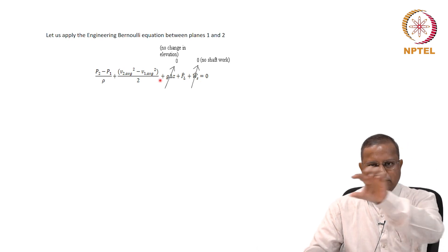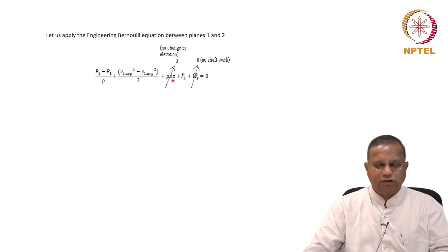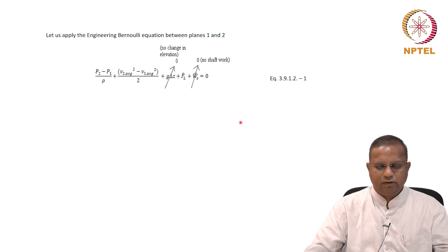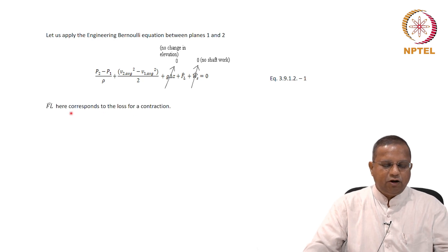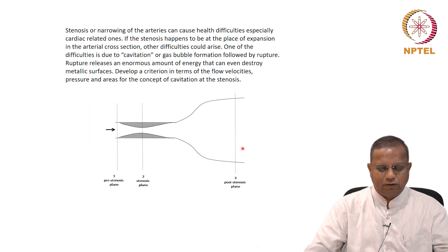So there is no shaft work to be taken into account. Also, this is a horizontal pipe, therefore no change in elevation, delta z is 0. So you have these terms remaining, equation 3.9.1.2-1. Friction loss here corresponds to a loss for a contraction. We have applied the engineering Bernoulli equation between planes 1 and 2, pre stenosis and stenosis plane here.